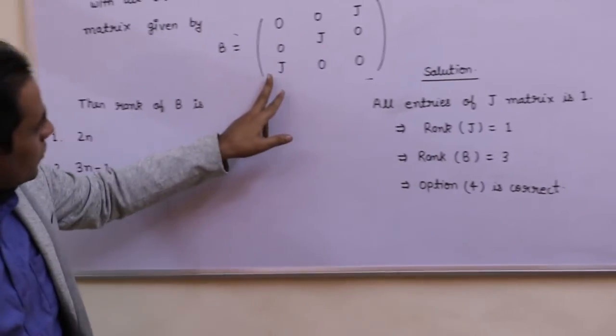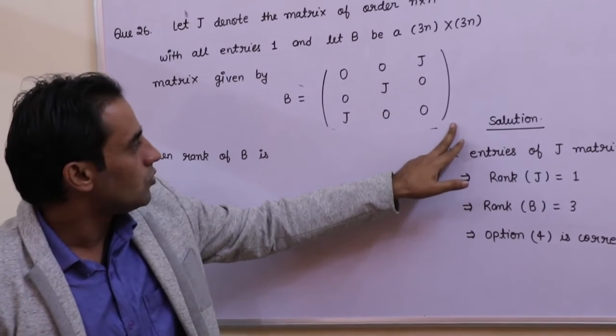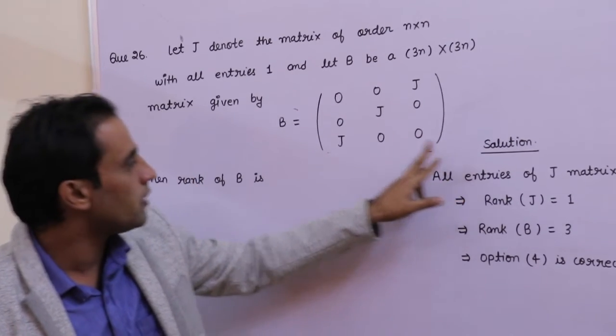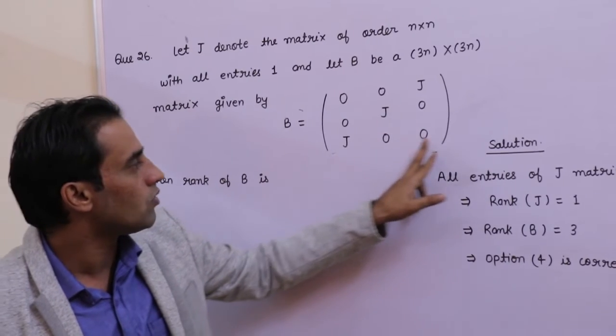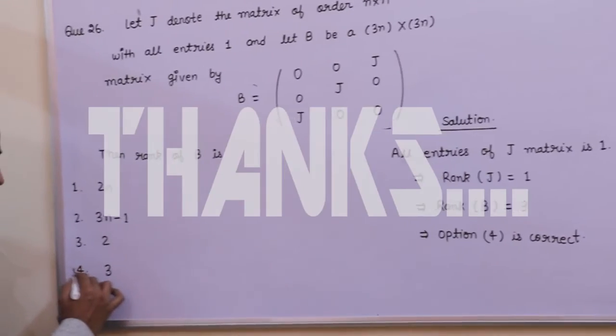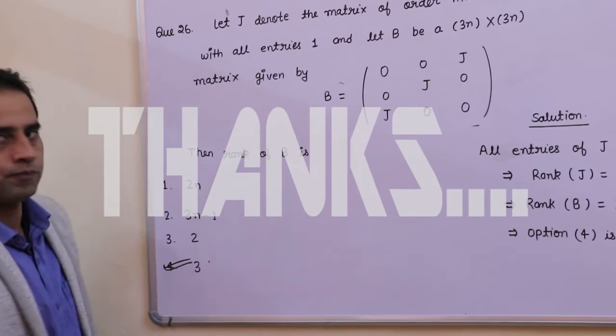This implies rank of this matrix is equal to 3, since number of LI columns in this matrix is 1, because in J number of LI columns is 1. Hence option 4 is correct. The rank of B must be equal to 3. Thank you.